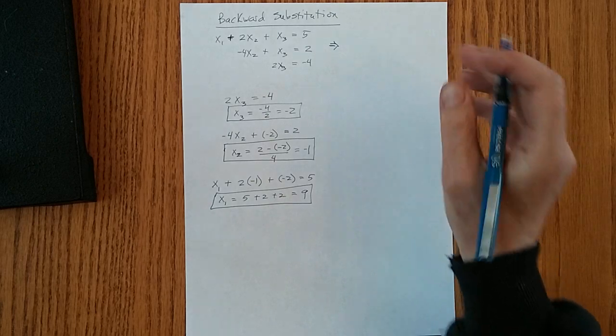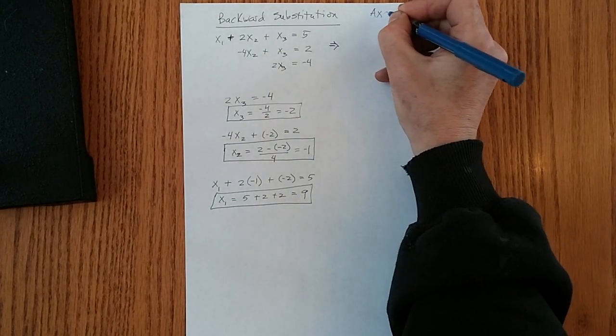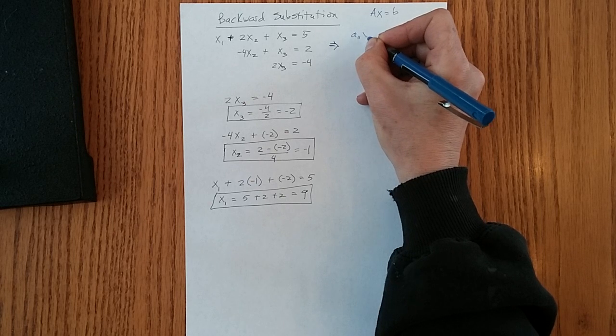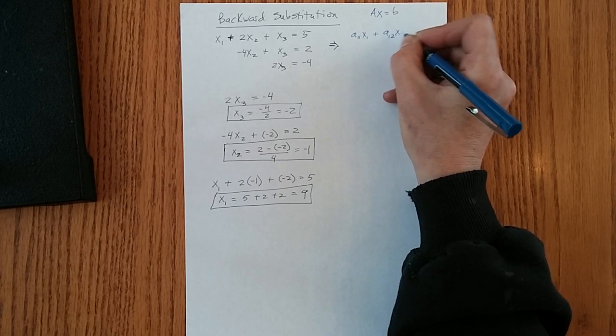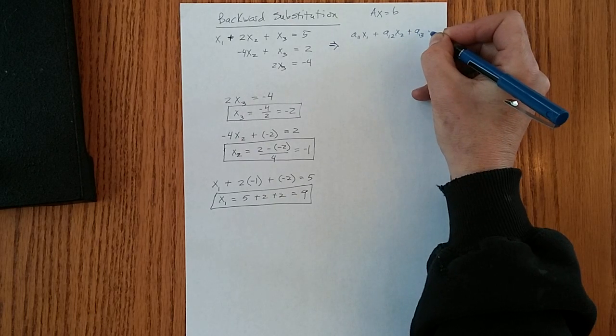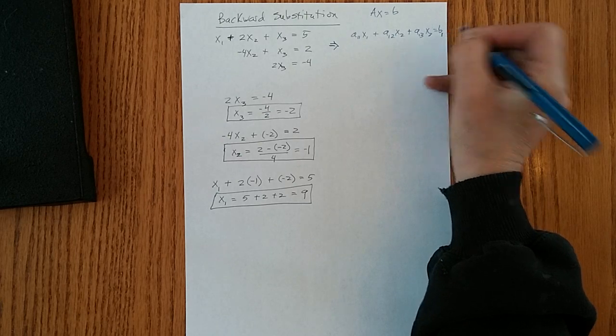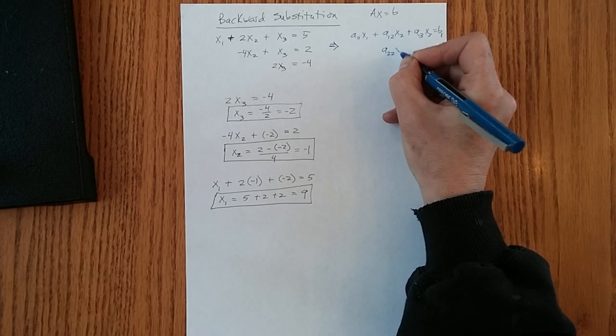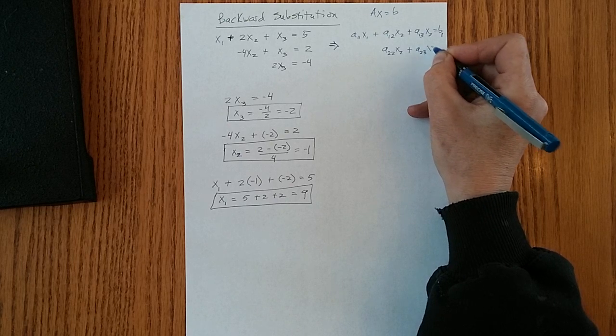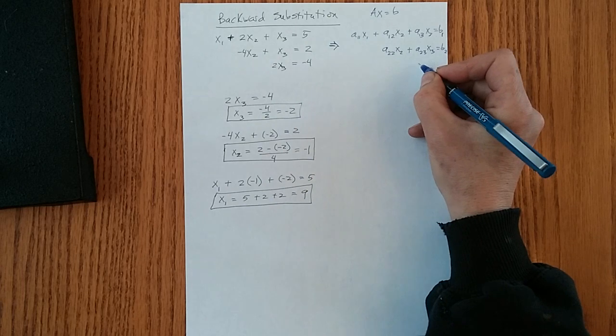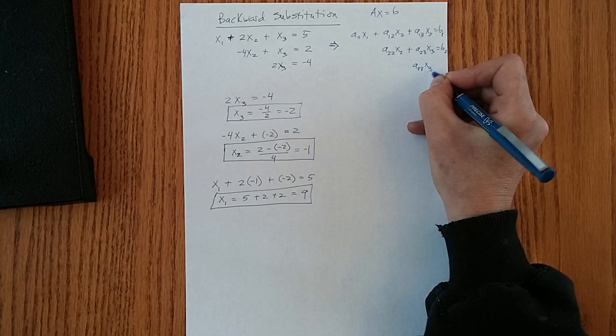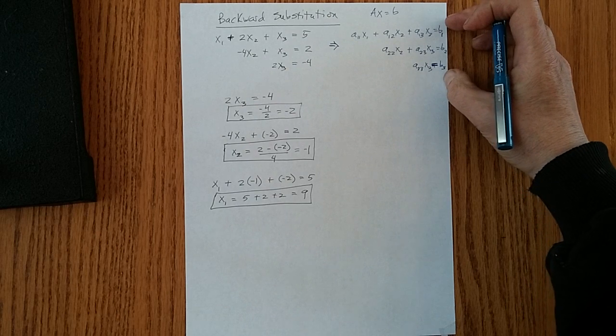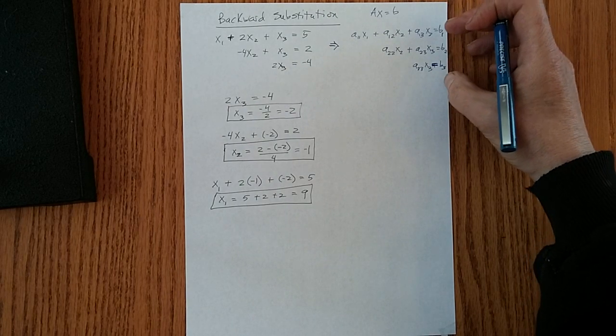The general form this takes is of the form Ax equals b. And for this one, we can say a11x1 plus a12x2 plus a13x3 equals b1. For the second row, we have a22x2 plus a23x3 equals b2. And the last row a33x3 equals b3. So that's our general form, and that will help us look at the pseudocode.